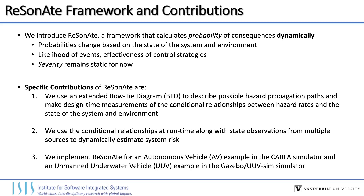For now, we treat the severity of any consequences as static. With Resonate, we use an extended bowtie diagram to describe how hazards can propagate through the system and escalate from relatively minor events into more serious consequences. We then make design-time measurements of the conditional relationships between particular hazard rates and the state of the system and the environment. Using those design-time measurements at runtime, along with observations about the system state, we can then dynamically estimate the risk posed to the system. Finally, we implement Resonate on an autonomous vehicle example in CARLA, which we'll talk about in a moment.